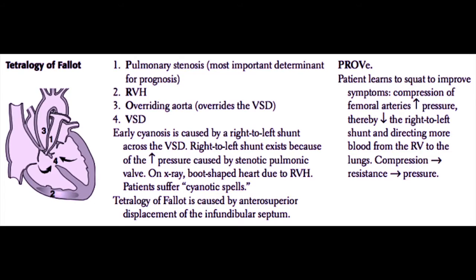Often these patients suffer cyanotic spells due to increased periodic blood flow from the right ventricle into the aorta, and they learn to squat to improve their symptoms. Squatting compresses the femoral arteries, which increases aortic pressure. As aortic pressure increases, this decreases the right-to-left shunt, forcing more blood into the pulmonary arteries and directing more blood from the right ventricle into the lungs to become oxygenated. Tetralogy of Fallot is caused embryologically by the anterior superior displacement of the infundibular septum.